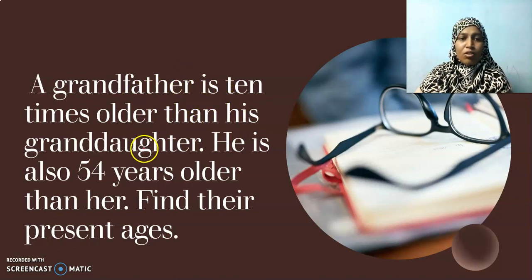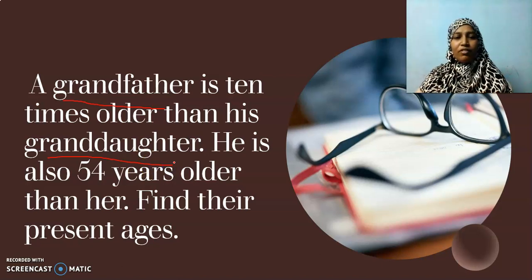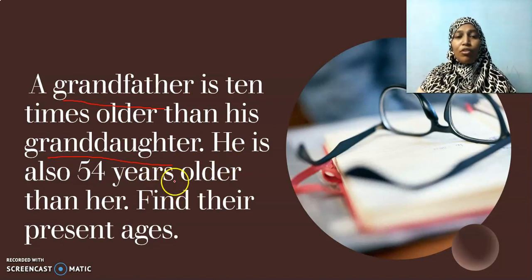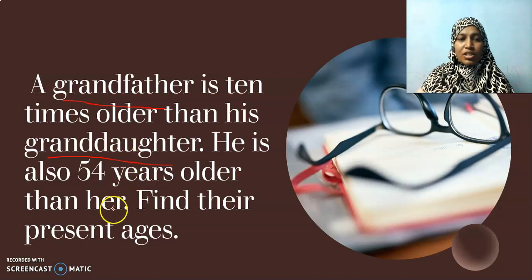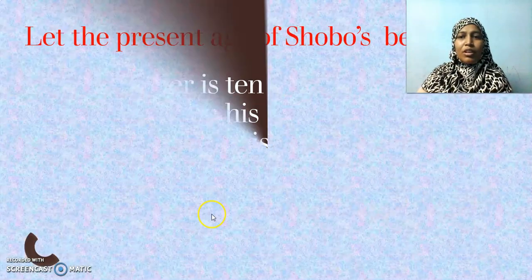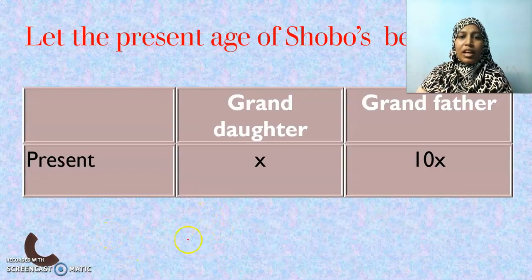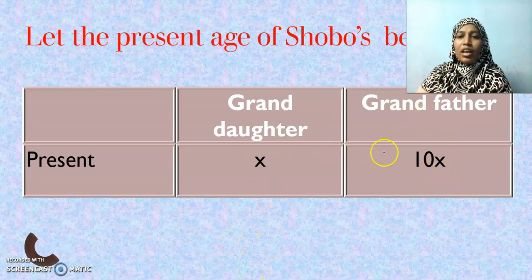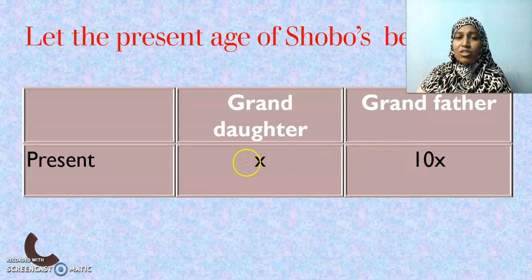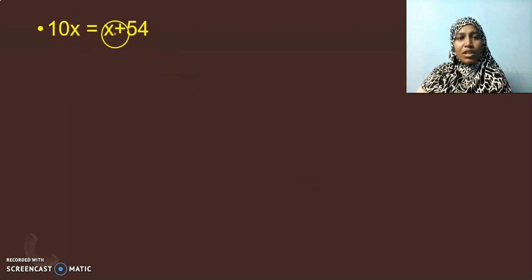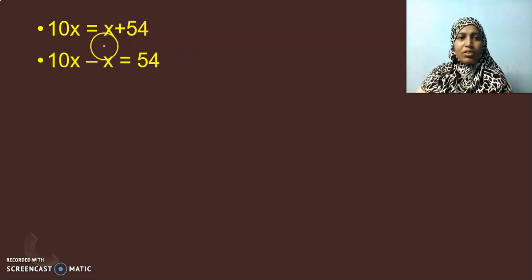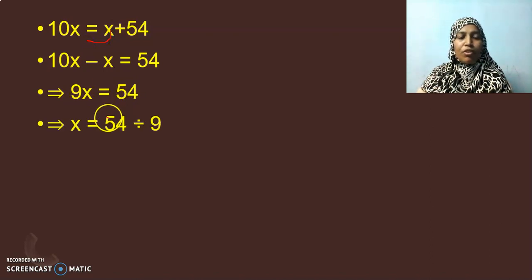Now the question is: a grandfather is 10 times older than his granddaughter. We have 2 people here, grandfather and granddaughter. Now, your grandfather and yourself like that. He is also 54 years older than her. So what is the difference in their ages? 54 years. Find their present ages. This is very simple. No need to make it complicated. Just have it as: granddaughter's age is X and grandfather's age is 10X. And they have the difference in their ages to be 54, which is bigger number, 10X or X? Yes, 10X. So if I subtract now, 10X minus X, it should be 54. Or I can say, grandfather's age is granddaughter's age plus 54. You can have it in either way. Both will lead to the same answer. So 10X minus X get transposed. We get 9X is equal to 54. X is equal to 54 divided by 9. 1 times 9 is 9. 6 times 9 is 54.